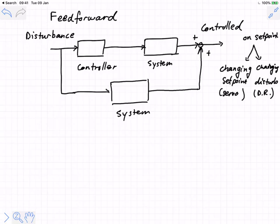The beauty of linear analysis is, way back when we started with these analyses, we said it doesn't matter if that controlled variable is equal to some non-linear effect, like sine of a times b. That's actually what happens — C is just sine of a times b. Non-linear, there's not an add in sight.